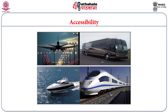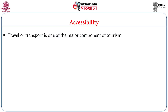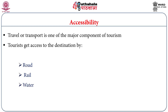Next is a very important component called accessibility. Tourists have a demand in their mind, but their dreams cannot come true unless they reach the place. There are varieties of modes of transport to reach a destination, which we call accessibility in tourism studies. Travel or transport is one of the major components of tourism. Tourists get access to a destination by road, rail, water, and air — these are the four important modes.